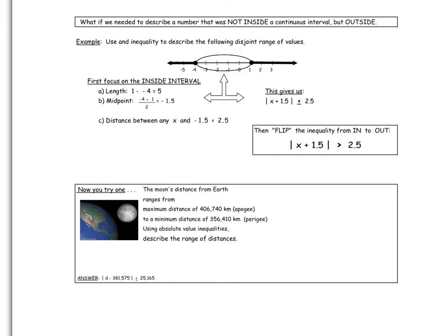This gives us this inequality. If we flip the inequality from being in, which is less than or equal to, to being out, which is greater than, we end up with x plus 1.5 is greater than 2.5.